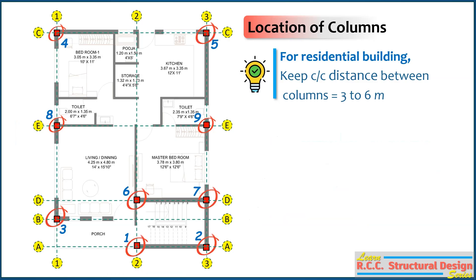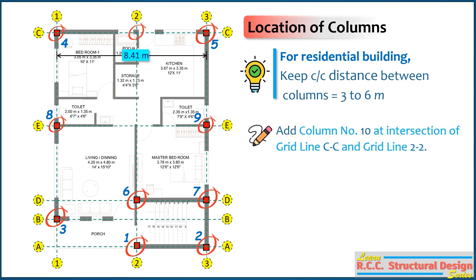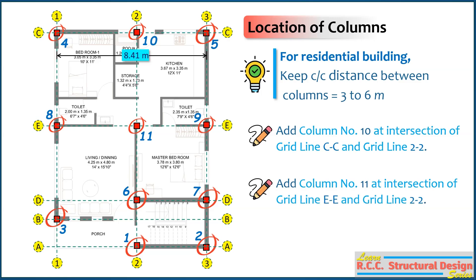Similarly, add column number 9 between columns 5 and 6 at the intersection of grid line EE and grid line 3-3, which is also the intersection of a wall. Here, the center-to-center distance between columns 4 and 5 is also around 8.41m. Therefore, we can provide one more column in between these two. Add column number 10 at the intersection of grid line CC and grid line 2-2, which is the corner of the kitchen room. Similarly, add column number 11 between columns 8 and 9 at the intersection of grid line EE and grid line 2-2, which is the corner of the master bedroom.